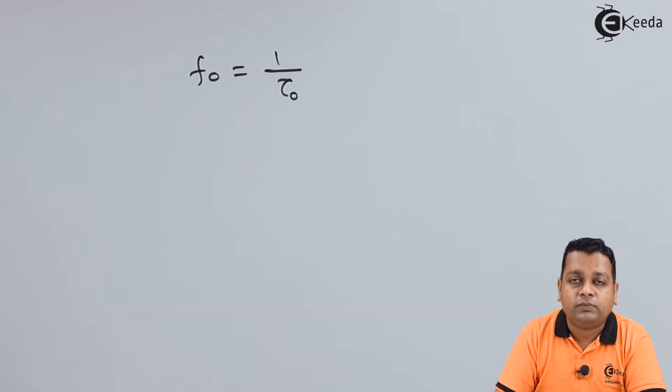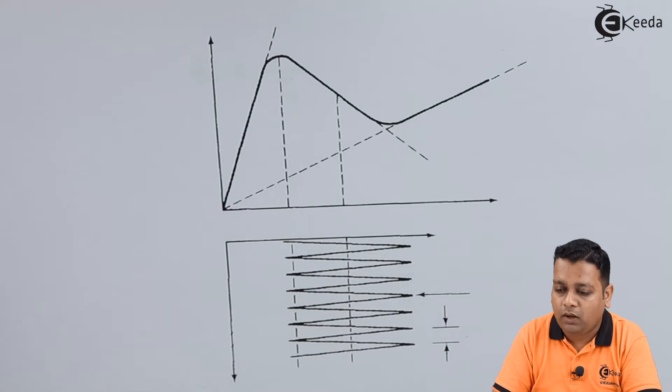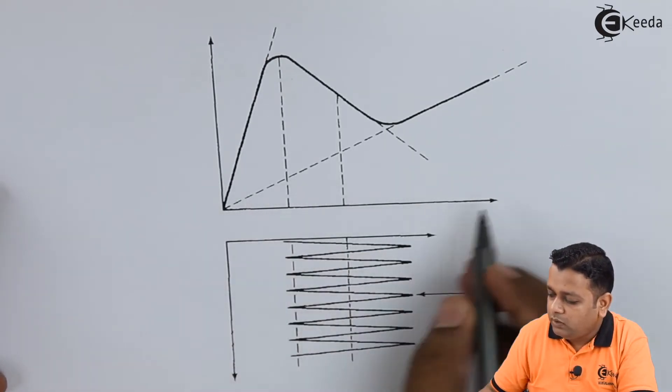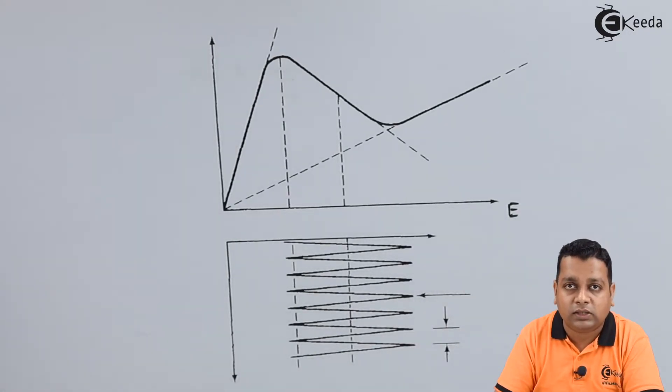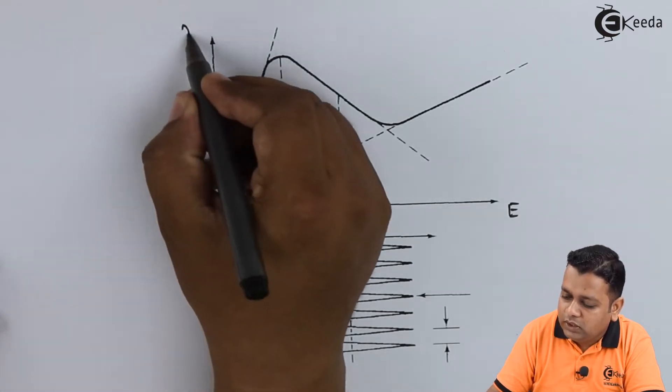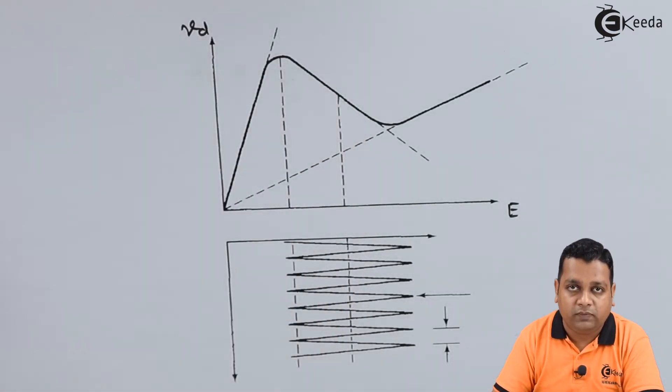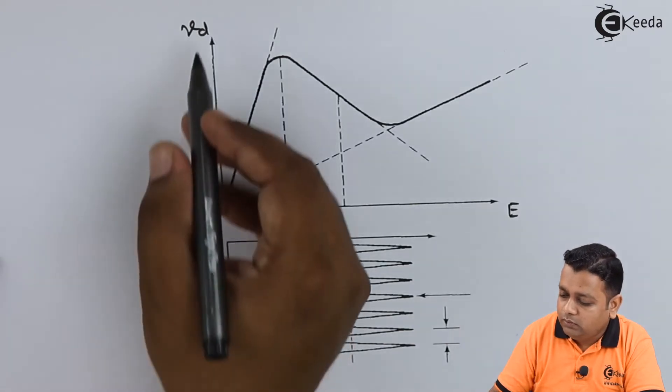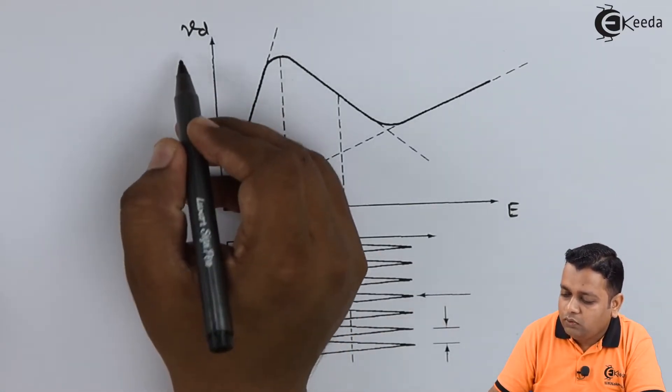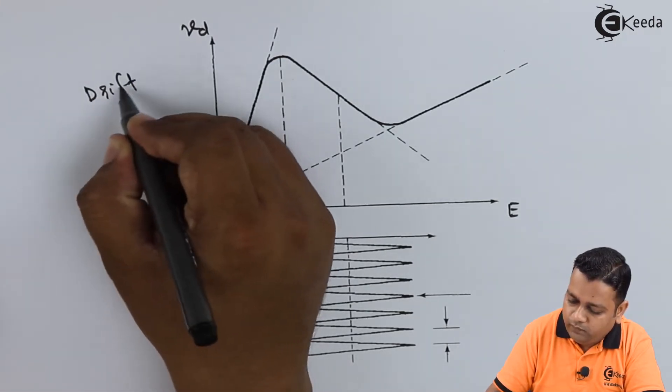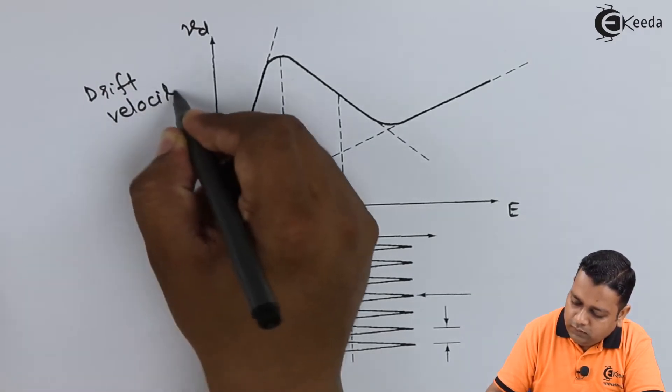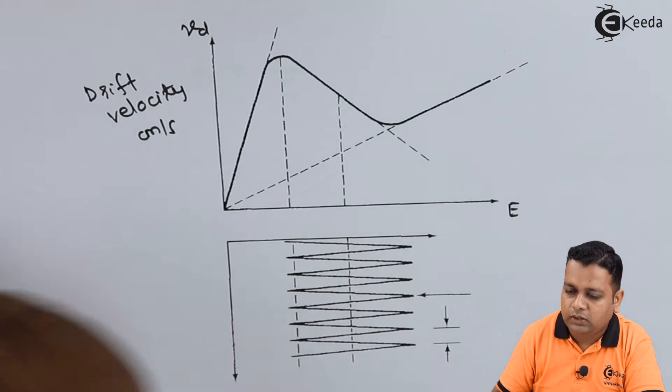It can be better explained for the LSA diode with the help of a diagram. In this diagram we have the part that represents the electric field applied to this n-type gallium arsenide versus the drift velocity that generally we represent V sub D. In this particular graph we have the drift velocity measured in terms of centimeters per second.